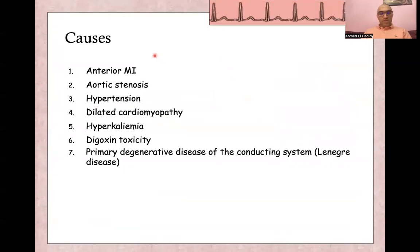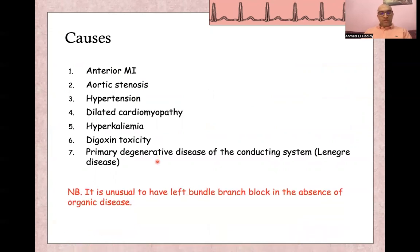Many causes can lead to left bundle branch block, like anterior myocardial infarction, aortic stenosis, hypertension, dilated cardiomyopathy, hyperkalemia, digoxin toxicity, or primary degenerative disease of the conductive system like Lenegre's disease. Note that it is unusual for left bundle branch block to be seen in the absence of organic disease of the heart.